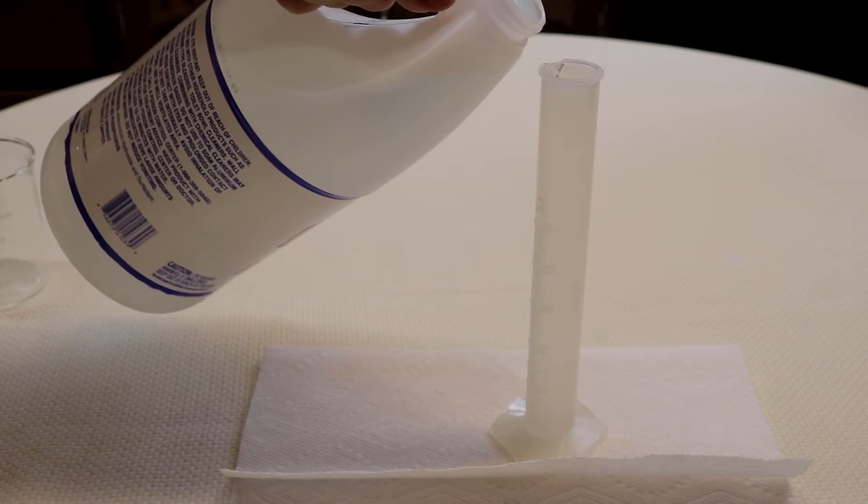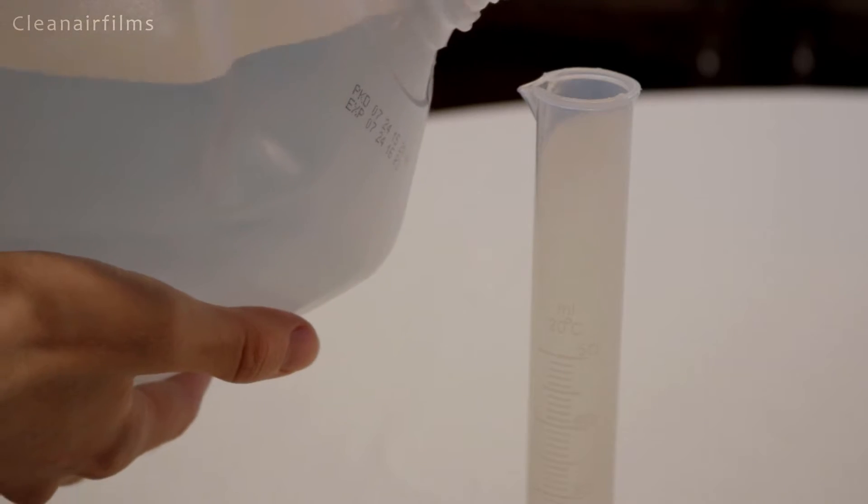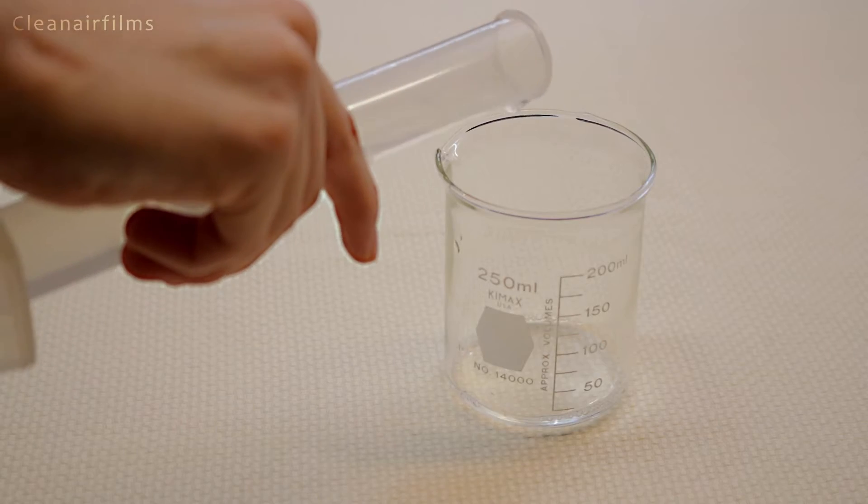Next we will make the ammonia solution. Measure out 10 milliliters with a graduated cylinder and put it in a beaker. Then measure out 90 milliliters of distilled water to the ammonia.